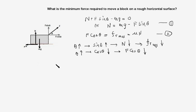The conclusion of the discussion is that the angle theta should neither be too small, that is close to 0 degrees, nor too large, that is close to 90 degrees. The optimum value of theta should be somewhere midway in order to obtain the minimum value of the applied force. We will now do the mathematics to work out this optimum value of theta and calculate the magnitude of the force F.